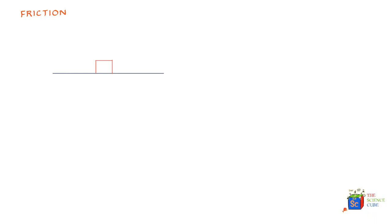Let's say you have a mass m sitting on a table. It will put a force on the table equal to mg, and the table will push back on the mass in the upward direction with the same value mg. We call this the normal reaction, equal to mg, because the mass is not moving in the vertical direction.